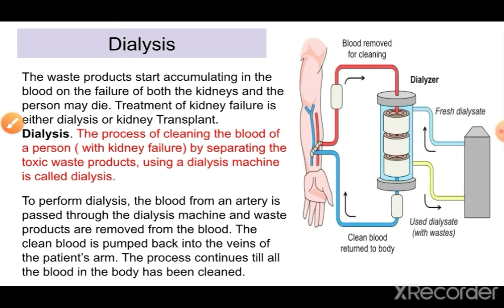A person has two kidneys. If one kidney stops functioning, the person can lead their whole life on the other kidney. But if both kidneys stop functioning, the waste gets accumulated in the body, and if this waste accumulates more and more the person may die.